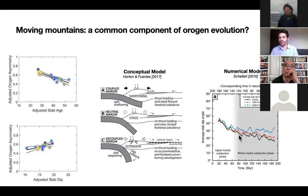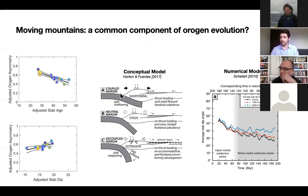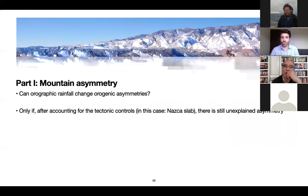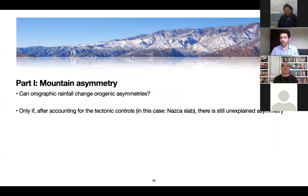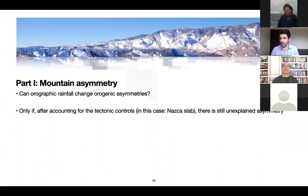After controlling for the tectonic controls of orogenic asymmetry, there's no leftover asymmetry to be explained by climate. This has important implications because slab geometry and age change through time, driving differences in the amount of deformation in the orogenic wedge. Changing slab angles through time can also drive mountains to be closer or farther from the trench over time. The answer to whether orographic rainfall controls orogenic asymmetry is basically no — after accounting for tectonic variables, we do not observe unexplained asymmetry for the Andes.